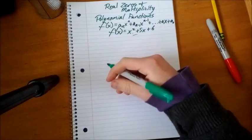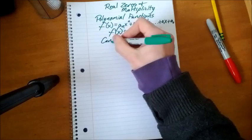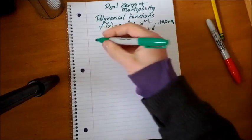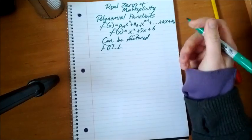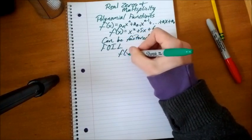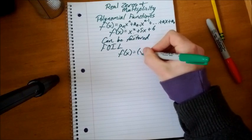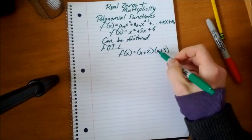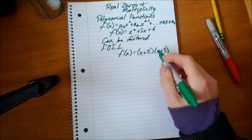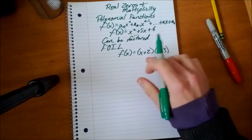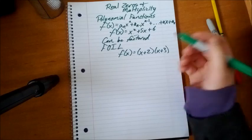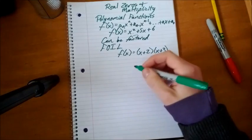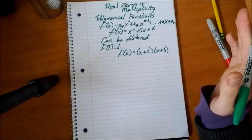So this is our polynomial function and it can be factored. To factor this, we have our old technique of FOIL and we're doing the reverse of FOIL. The factors are x + 2 and x + 3. That is because x times x for the first parts is x². 2 times x is 2x, 3 times x is 3x, 2x plus 3x is 5x, and 2 times 3 is 6.